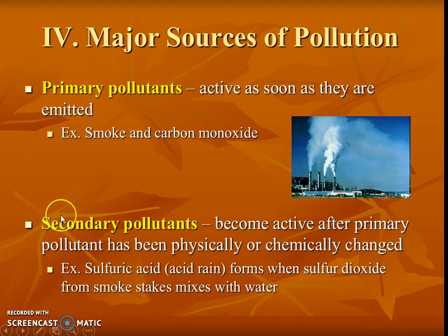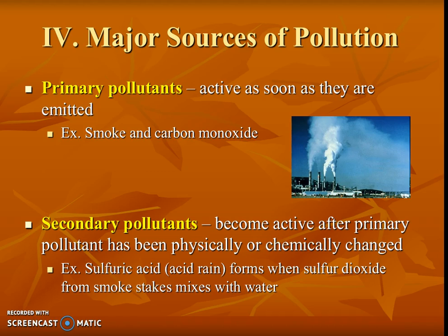Secondary pollutants — think about it as number two — that's when the active primary pollutant goes through a physical or chemical change and is still considered a pollutant. For instance, that smoke might have had sulfuric acid compounds in it. When sulfur dioxide — which we'll learn about in the atmospheric unit — comes through the smoke out of a smokestack, especially those burning coal, it combines with water and forms acid rain. That's considered secondary because it went through a chemical change and mixed with water, making it a second version of the pollutant.